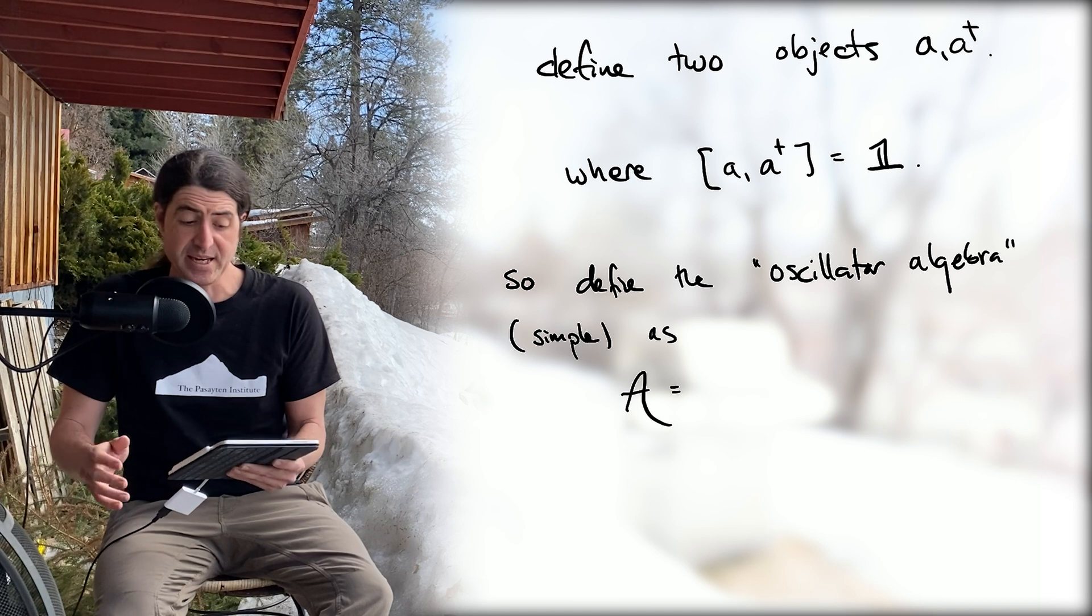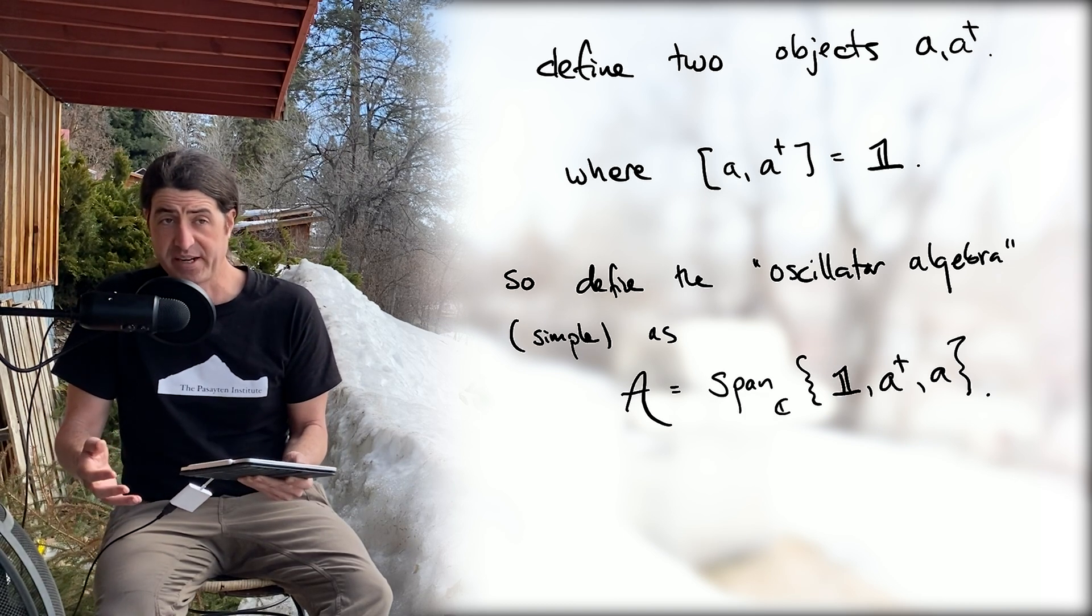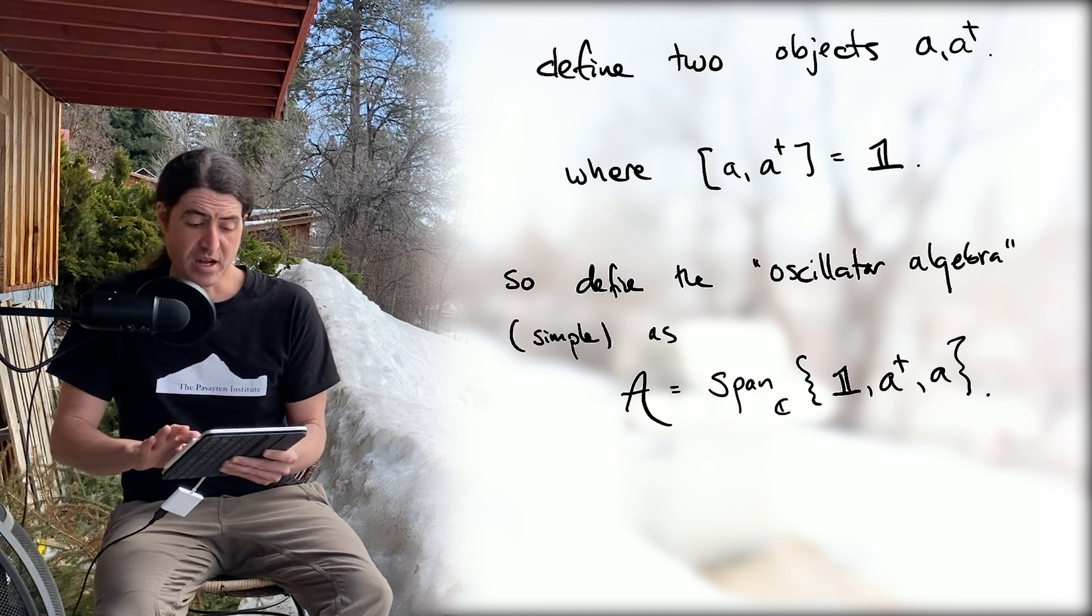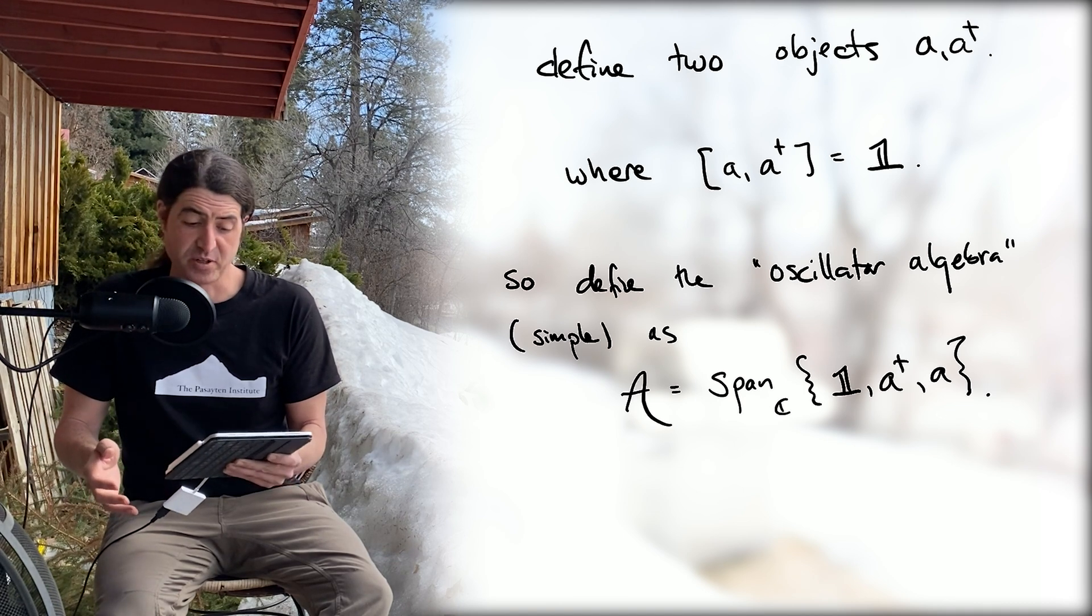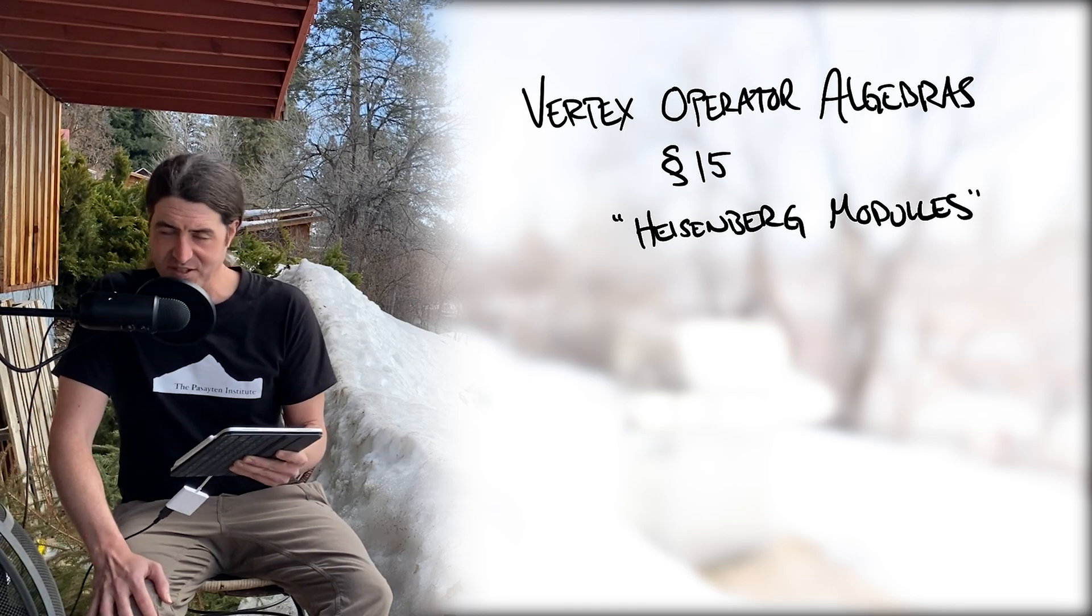Specifically, this simple oscillator algebra A is the complex span of one, a dagger, and a. So A is a Heisenberg algebra, and arguably it's the simplest possible one that we might consider. It's also really well understood—specifically, their modules are well understood. If you want to learn more about Heisenberg modules, check out the vertex operator algebra series, specifically section 15.